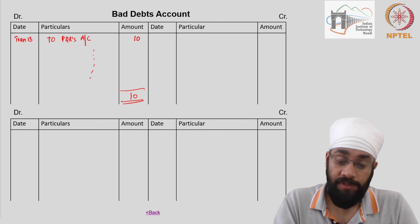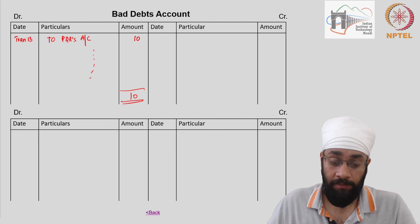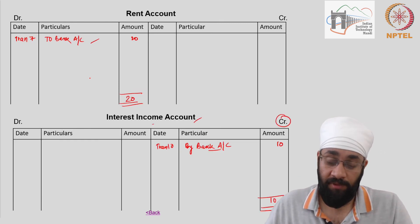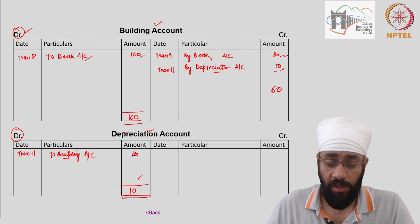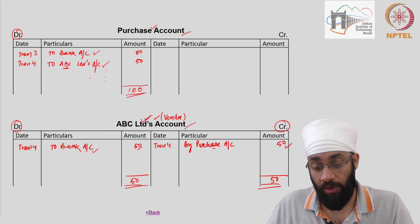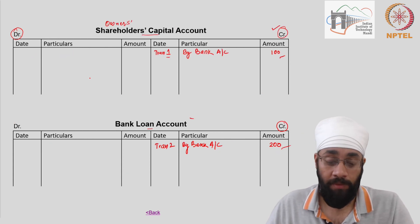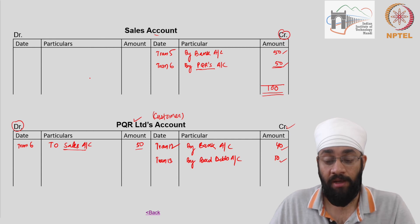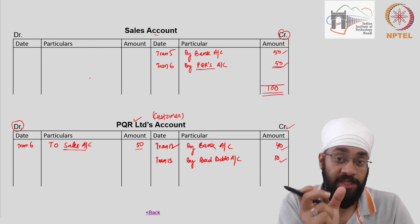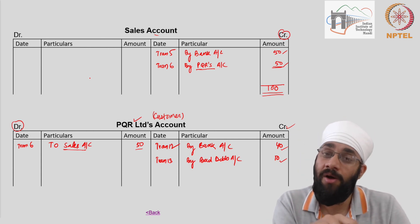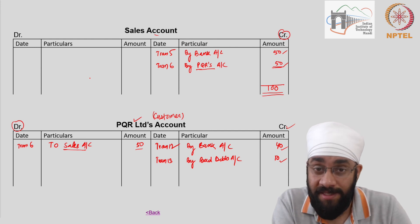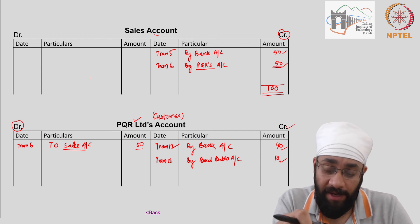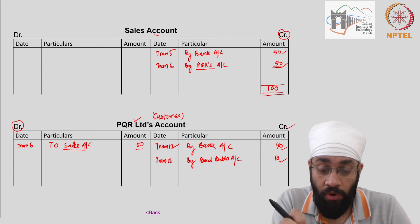So this is how you read the postings that you have done into these ledger accounts. You bring all the entries into one place. So that is the process of ledger posting and how recorded transactions from the journal are now classified in this step which is called ledger. So let me stop here and this completes the discussion on the process of ledger posting.